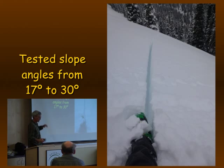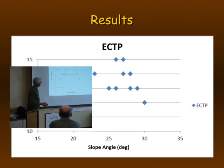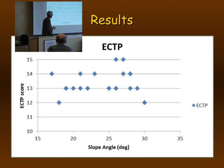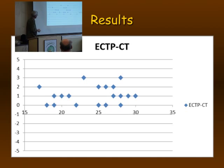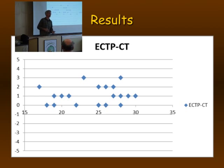We looked at slopes from 17 to 30 degrees on this day. The ECTP data varied from 12 to 15, and we don't see any trend with slope angle. The CT data varied from 11 to 13 — again, no trend with slope angle. When we look at the difference between the two, sometimes there's no difference, sometimes one, two, or three more taps with the ECT — again, no relationship to slope angle.